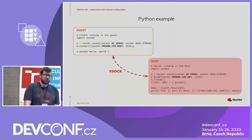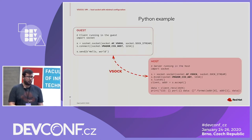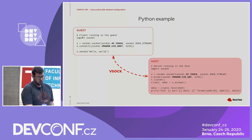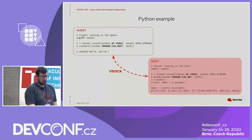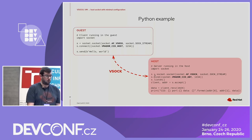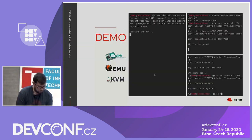Here's a simple example — two Python applications that communicate between guest and host. On the left, the client runs in the guest and connects to the server running in the host.